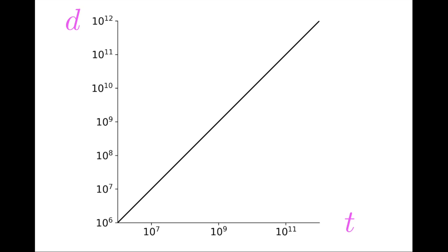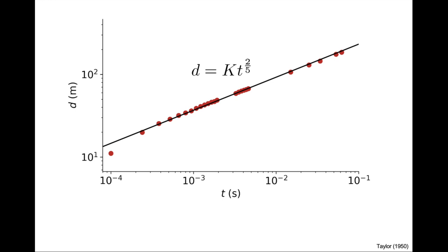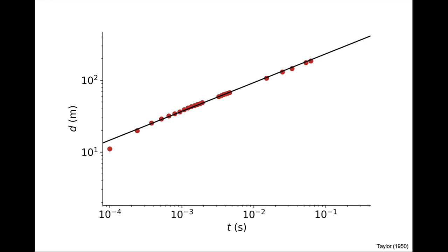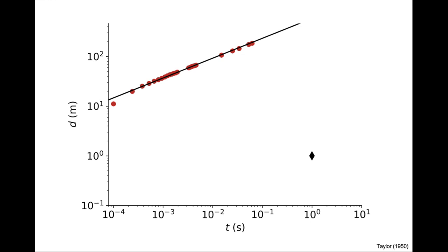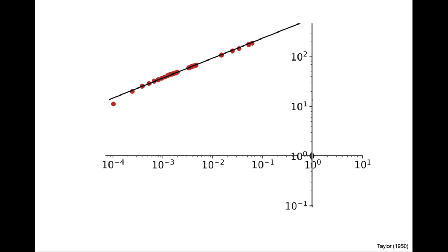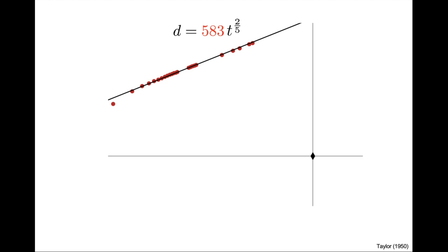This apparent scale invariance of a single regime can be illustrated by looking at how the value of the prefactor k depends on the choice of units. In the absence of any event, the choice of unit is arbitrary. For instance, if the power law corresponds to the dynamics of Trinity, we can measure distances in meters and times in seconds, in which case the prefactor k is 583 meters per second to the power 2/5. This plot makes it look like we are solely dealing with a self-similar power law, but this is incorrect. There is actually a point in hiding — an artificial event, the locus of our arbitrary units.